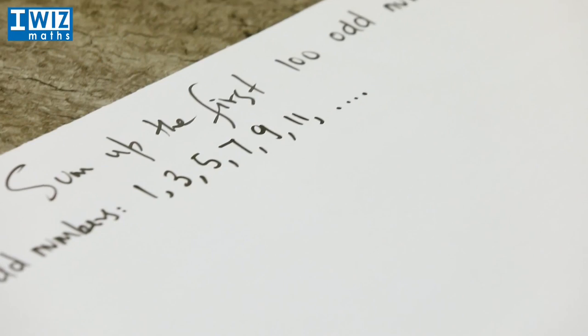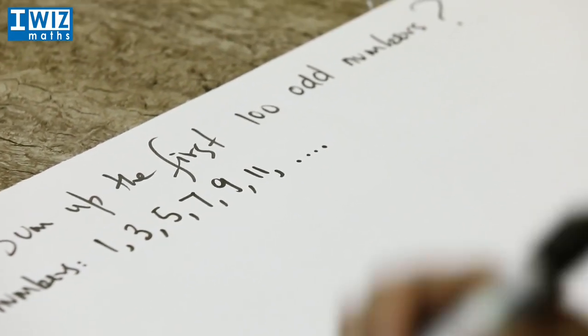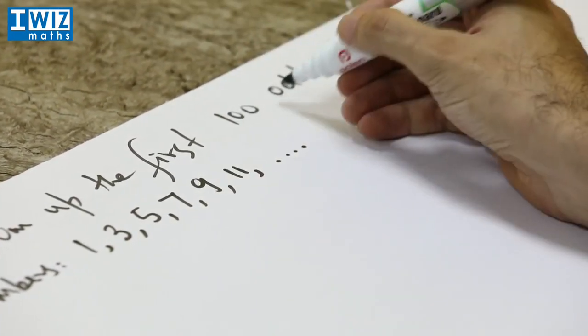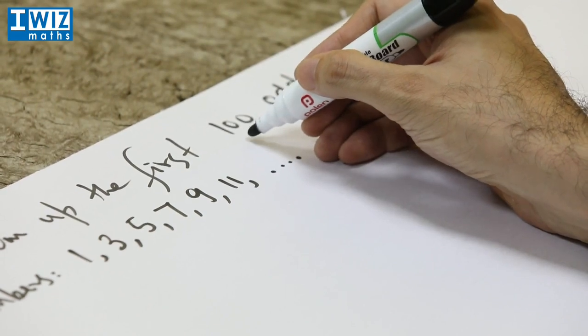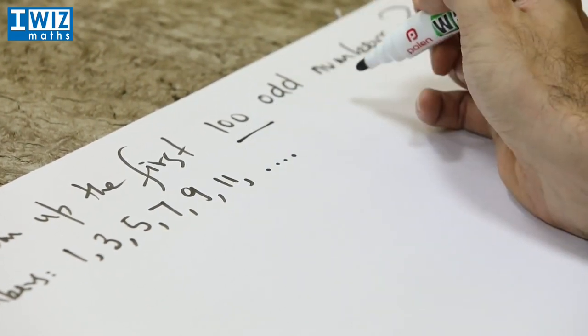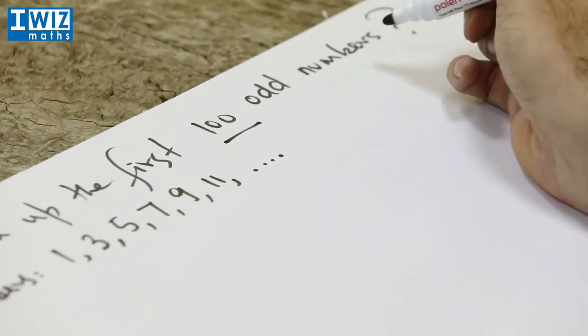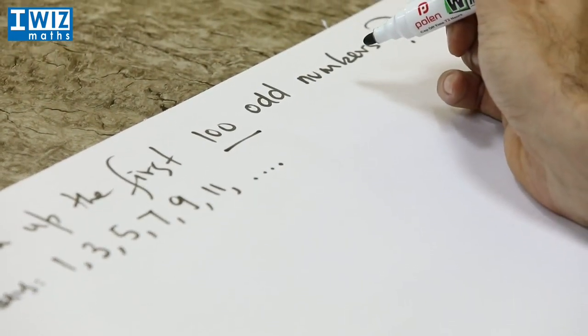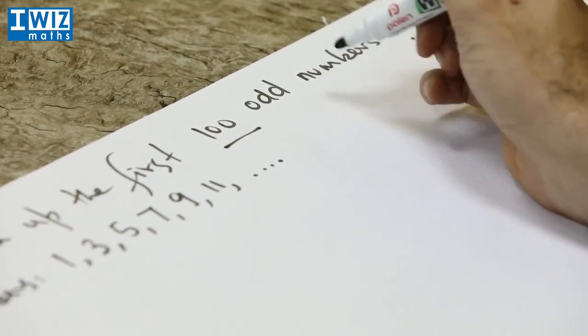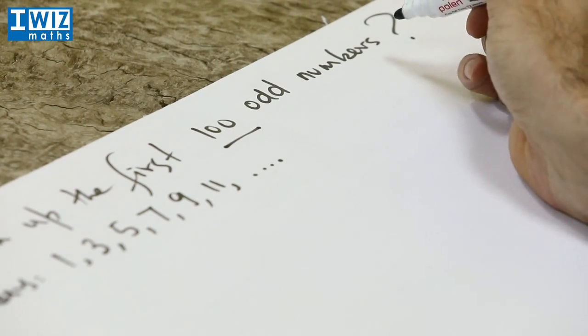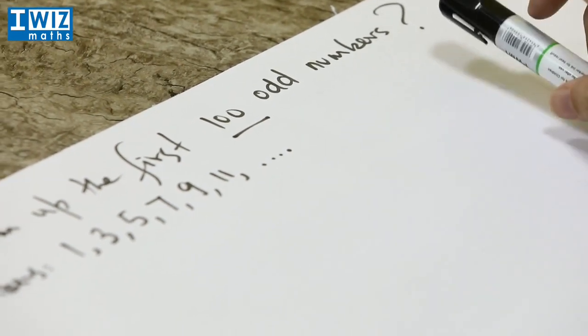Now what we have out here is a fairly daunting task even on a calculator. Essentially on a calculator you would need to punch in the first 100 odd numbers and then add them up. Now that's not what we want to do. We actually want to try and see whether we can spot a pattern.